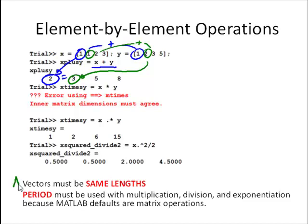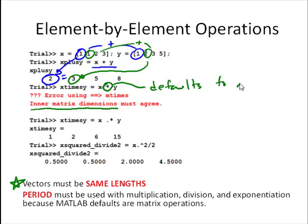That works for addition and subtraction. One thing we have to be careful about is multiplication and division. If we just use the same multiplication sign we've been using for scalars, we'll get an error: inner matrix dimensions must agree. That's because the asterisk for multiplication defaults to matrix multiplication.